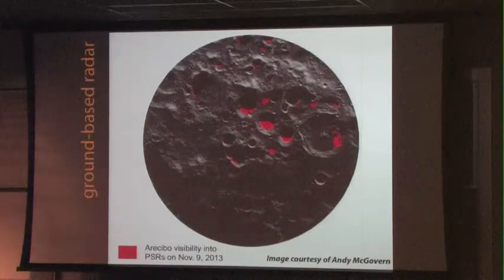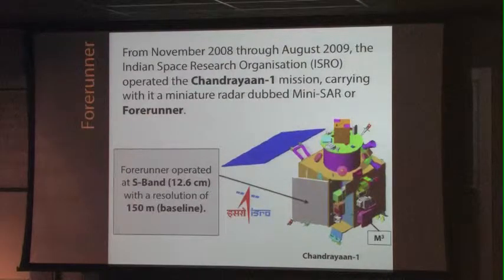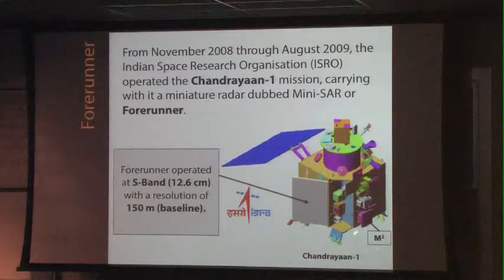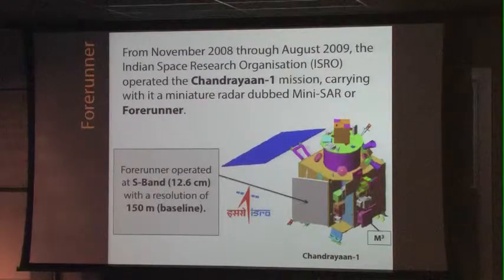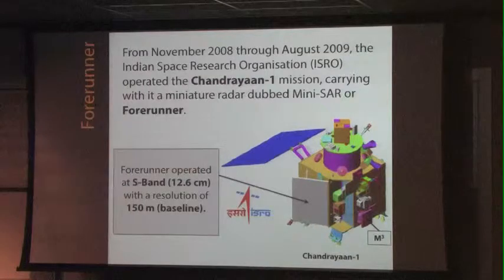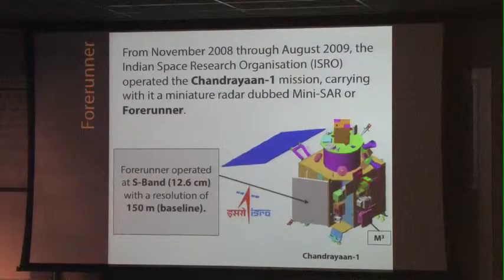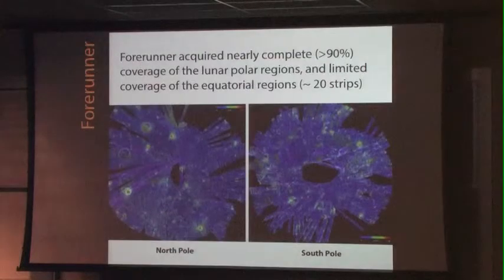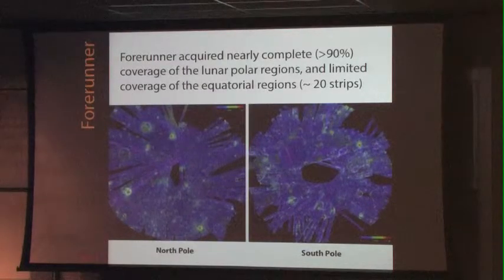That started the mini-RF project, which was launched on two satellites. The first orbital imaging radar was launched on the Indian Space Organization's Chandrayaan-1 mission — which also had M3, the Moon Mineralogy Mapper — but you don't actually hear much about the radar on Chandrayaan-1, which was also a NASA-supported instrument. Launched in November 2008, it had a somewhat simpler radar at one wavelength: S-band at 12.6 centimeters with a resolution of about 150 meters. It was called 'Forerunner' because it was a test case for the mini-RF instrument on LRO.